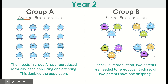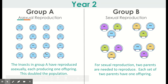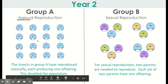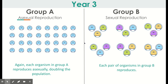In year two, you're going to notice that they reproduced and there are more insects in each group. Count how many organisms are in group A and how many are in group B, and record this on your table in slide 13. Then move on to year three, where you'll continue to see how the populations grow in both groups and record the numbers in the table.